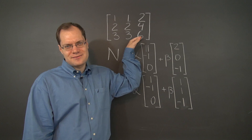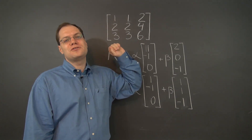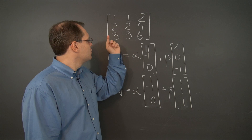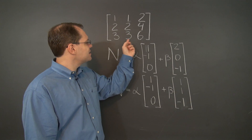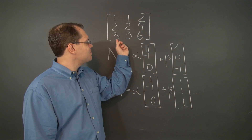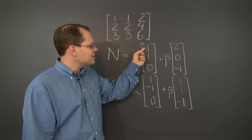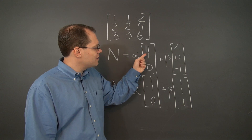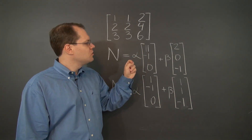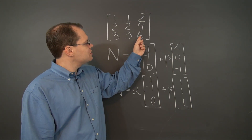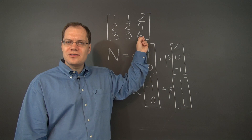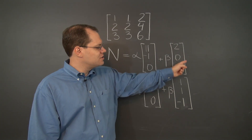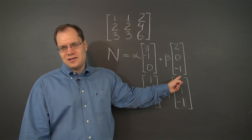Let's try to figure out its null space. You can notice two relationships among the columns. One is that the second column is the same as the first, so the first element in the null space is (1, -1, 0). You might also notice that the third column is twice the first, leading to this element of the null space.